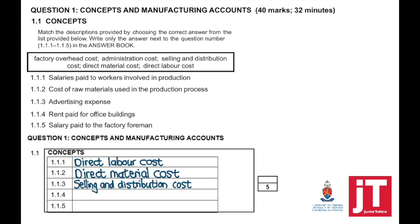Number four, rent paid for office buildings — they specifically spoke about office buildings, so it is administration cost. Salary paid to the factory foreman: the factory foreman works in the factory but is not directly involved in the process of making, therefore this will form part of your factory overhead cost. Make sure that you study your theory, know the terminology, and know under which cost account each expense falls.